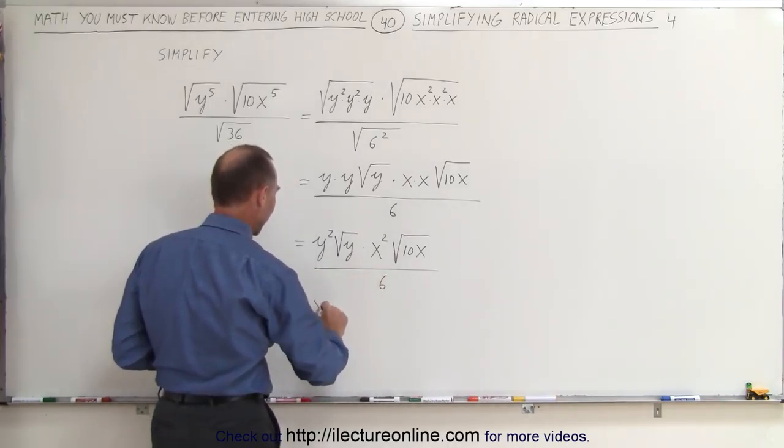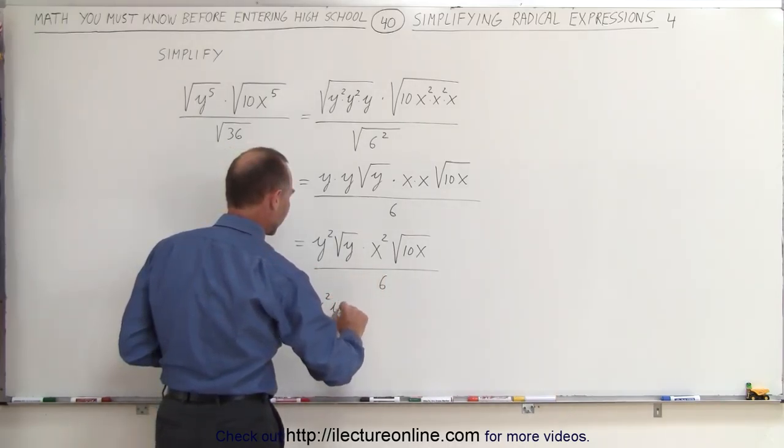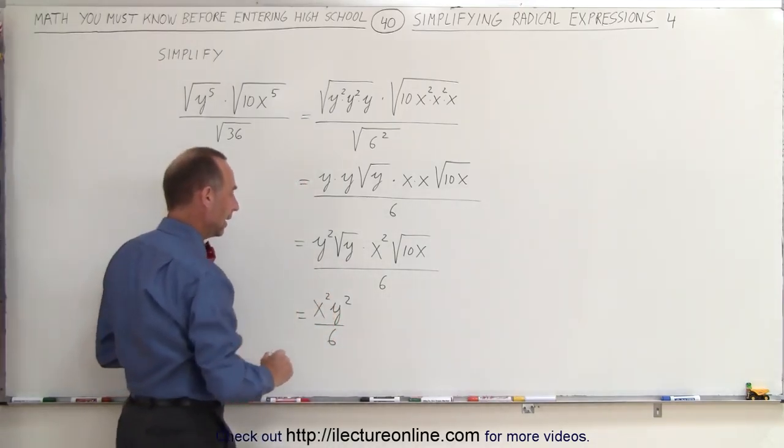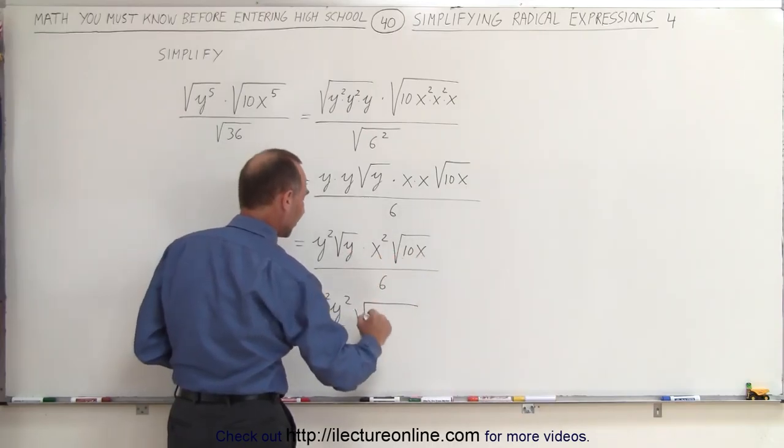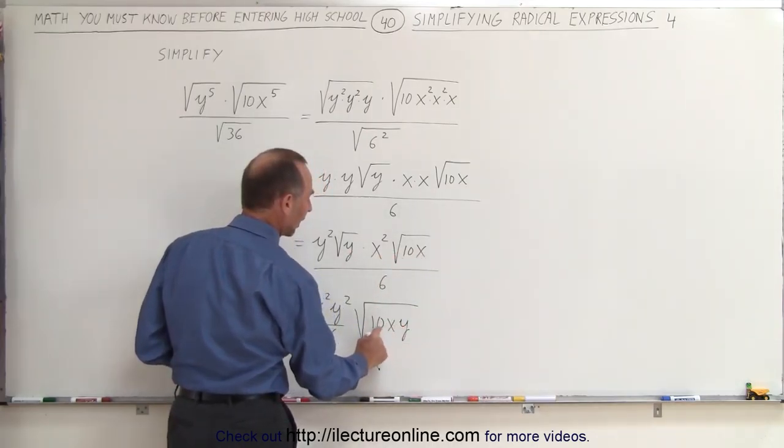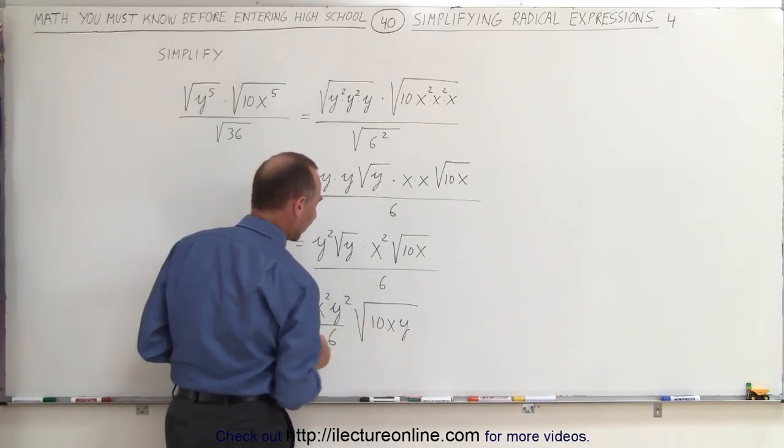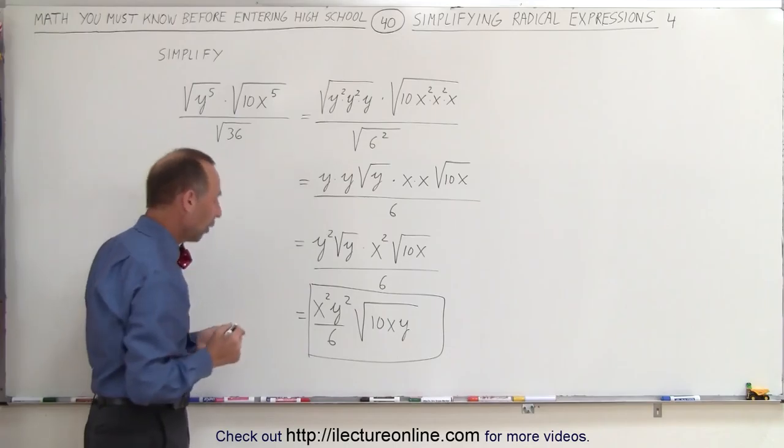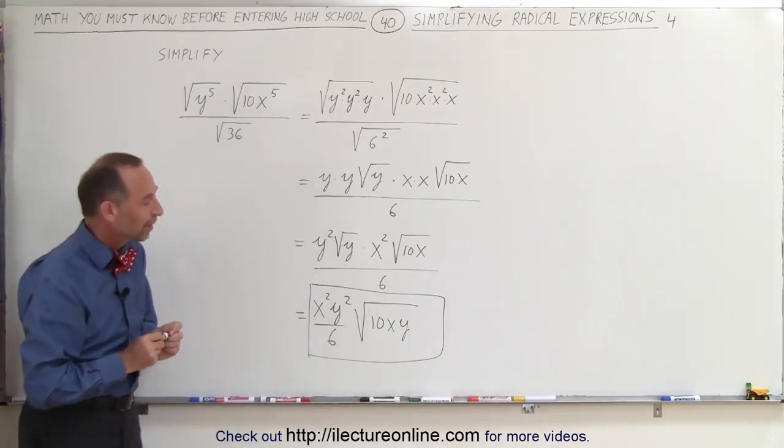This can be written as x squared, y squared, divided by 6. We typically write x before the y, and then times the square root of what's left, which is 10 times x times y. We typically write the number before the x, before the y. This is the simplified form of our original expression, and that's how it's done.